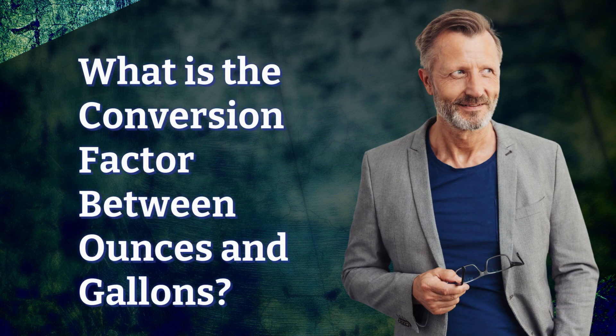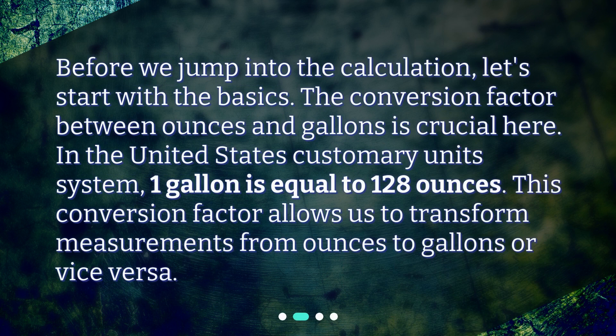What is the conversion factor between ounces and gallons? Before we jump into the calculation, let's start with the basics. The conversion factor between ounces and gallons is crucial here. In the United States customary unit system, one gallon is equal to 128 ounces. This conversion factor allows us to transform measurements from ounces to gallons or vice versa.